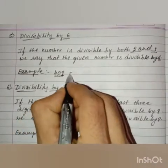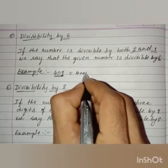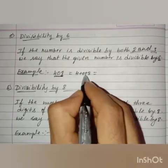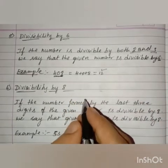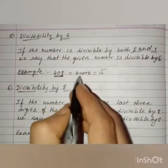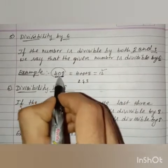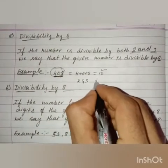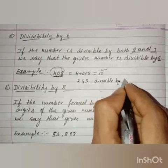Now let us find out if the given number is divisible by 3 or not. We should add the digits: 4 plus 0 plus 8. So 4 plus 0 is 4, and 4 plus 8 is 12. Since 12 is divisible by 3, and the number is also divisible by 2, the entire number is also divisible by 6.